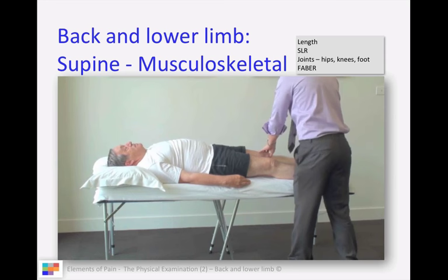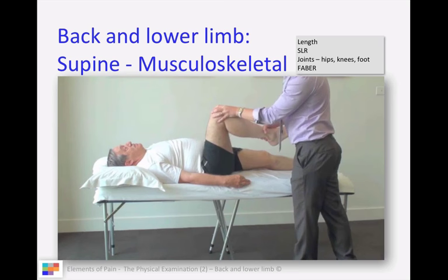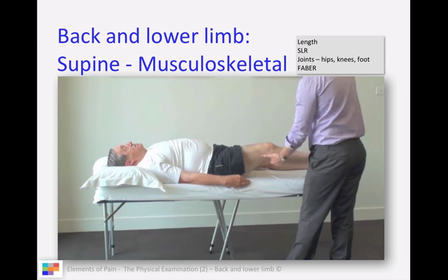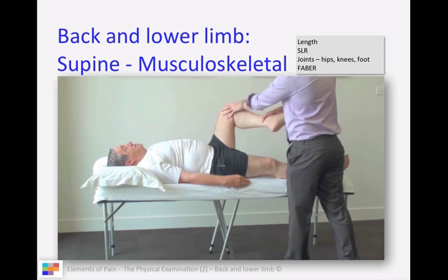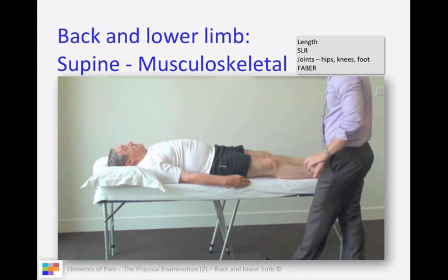Then you're going to move on to your hip joints. Assessing flexion, internal rotation, and external rotation - checking the range of movement and seeing if you can reproduce any pain. Generally hip pain is anterior groin type pain, as opposed to back pain caused by other pathologies.